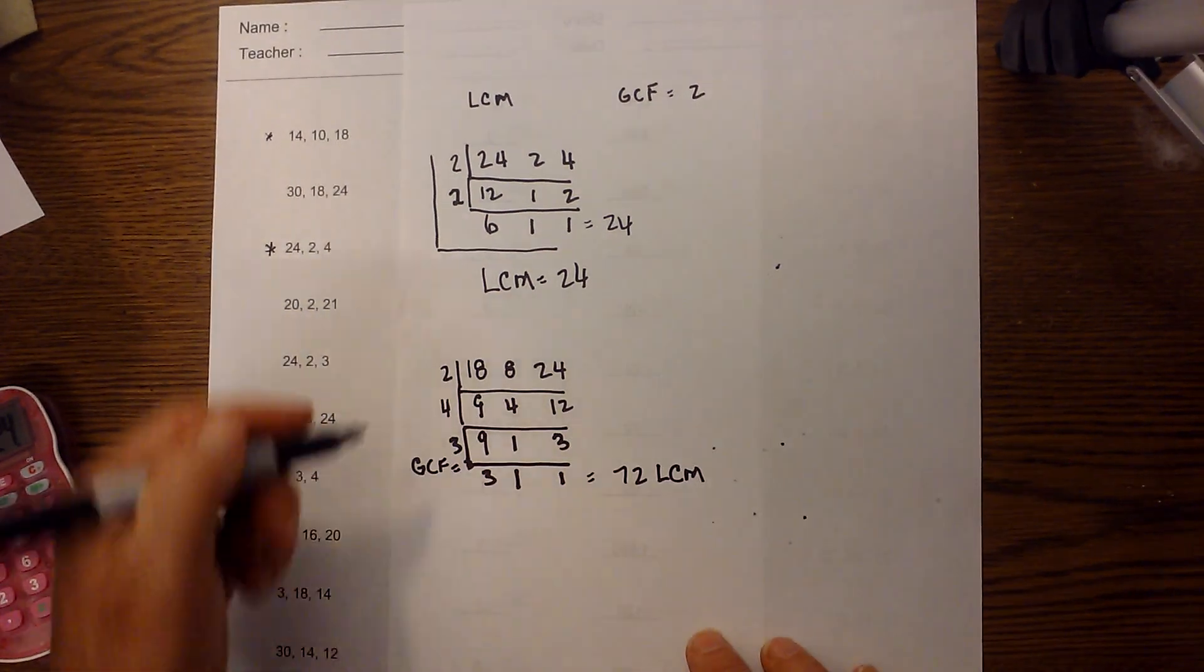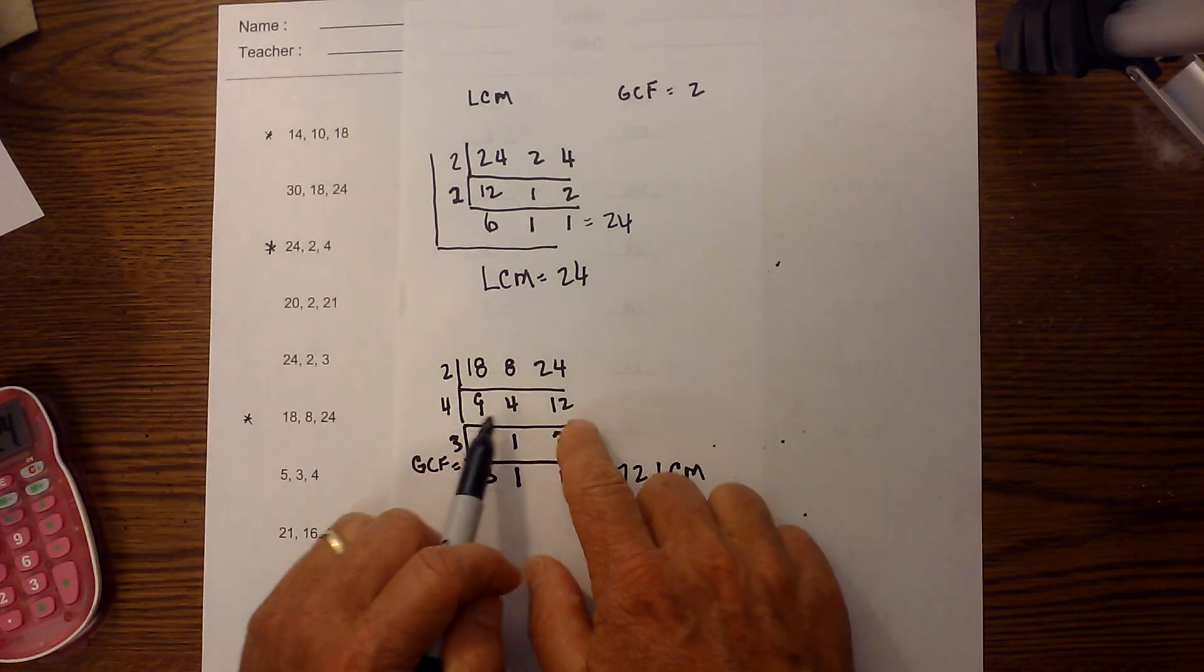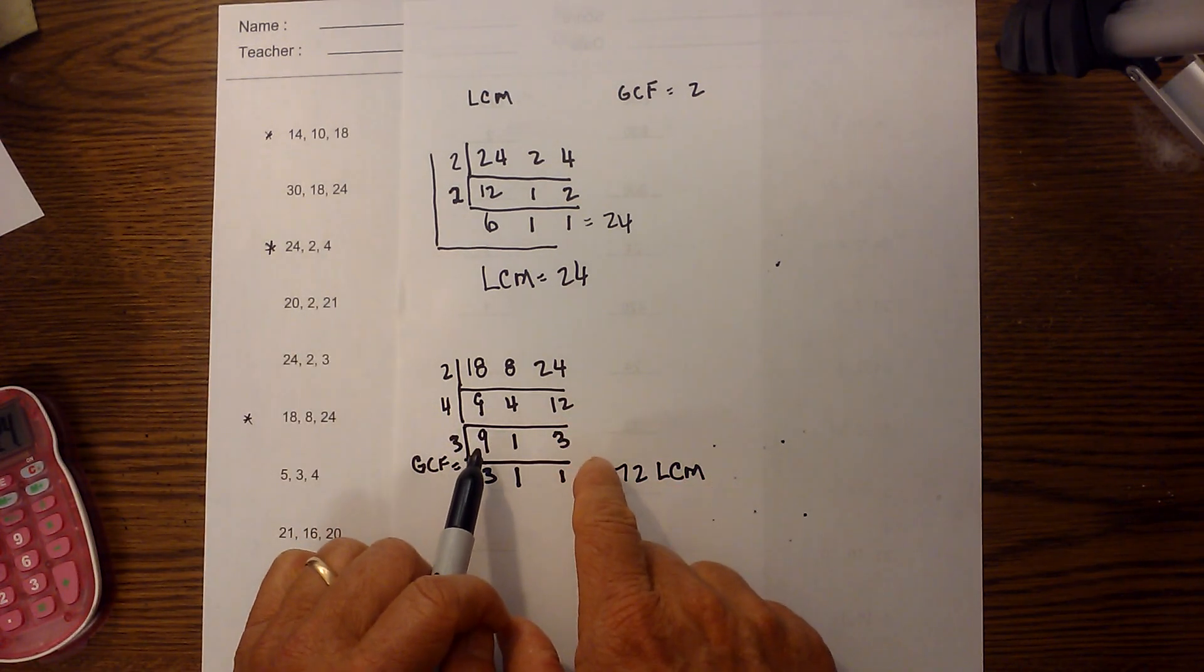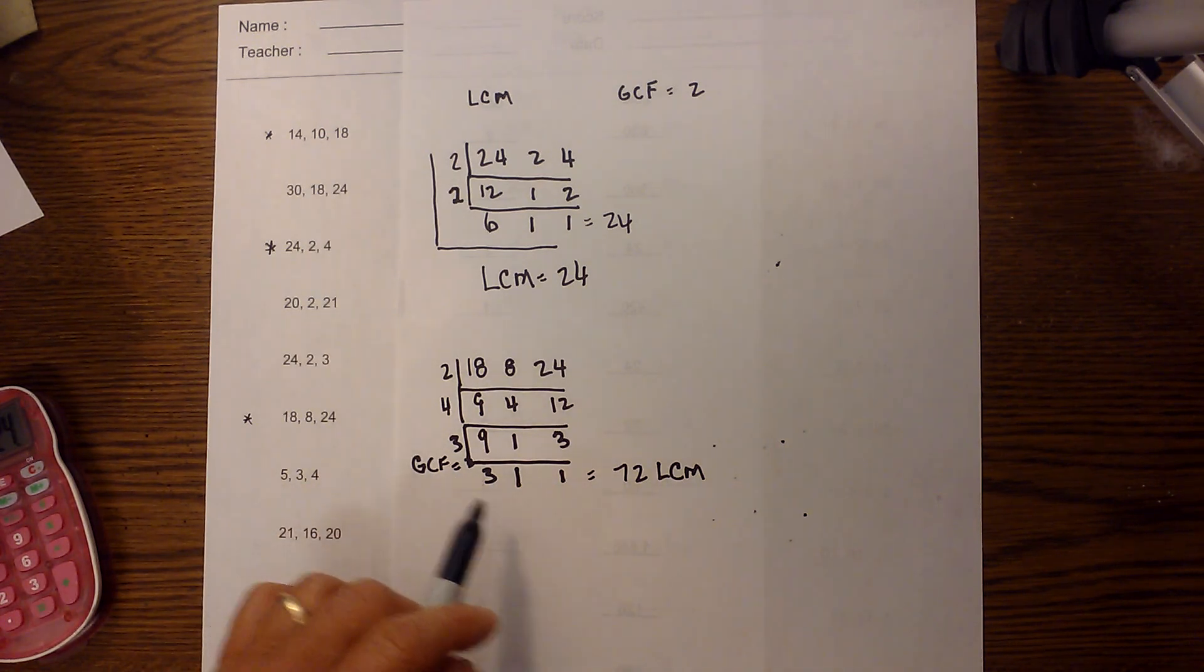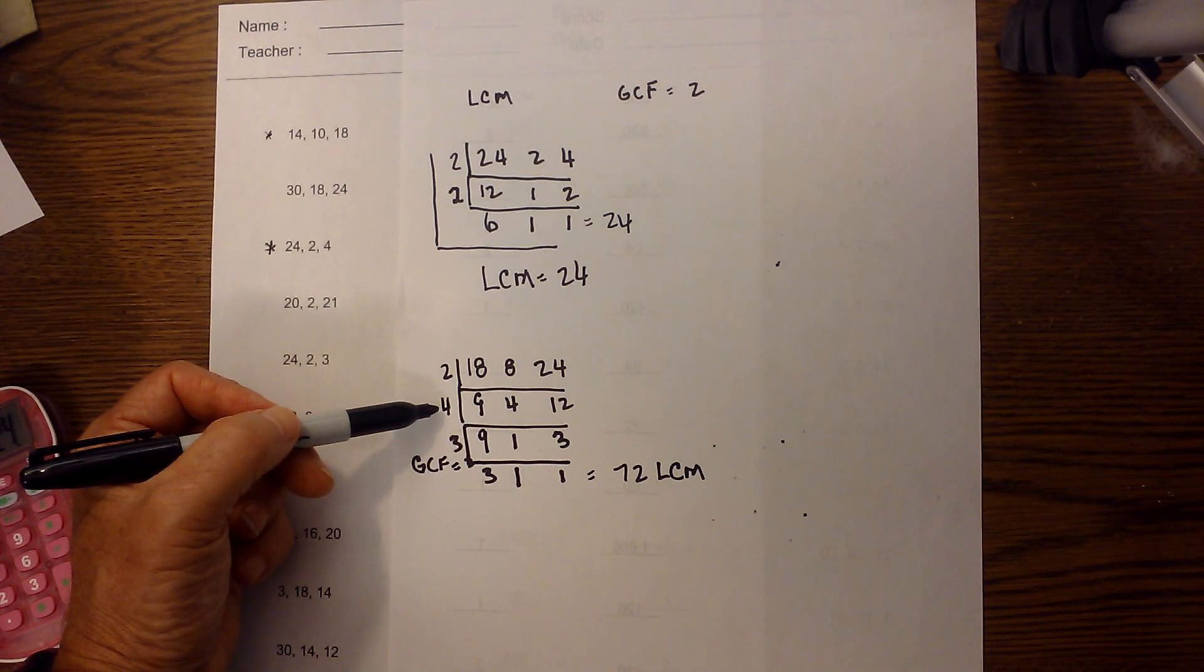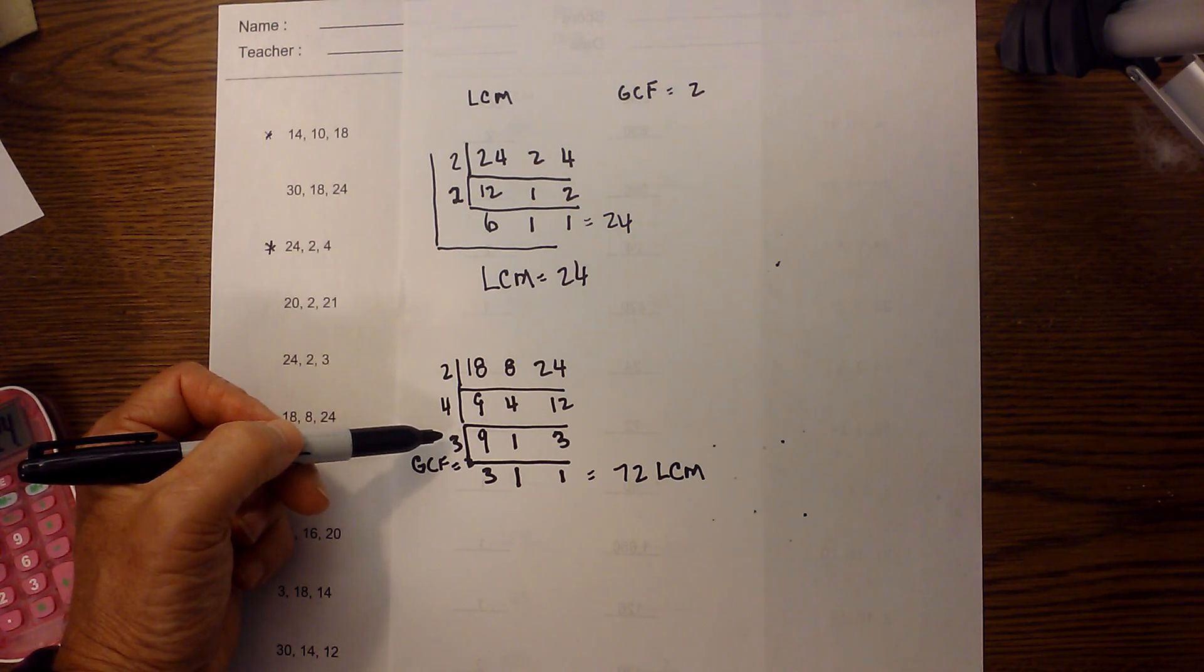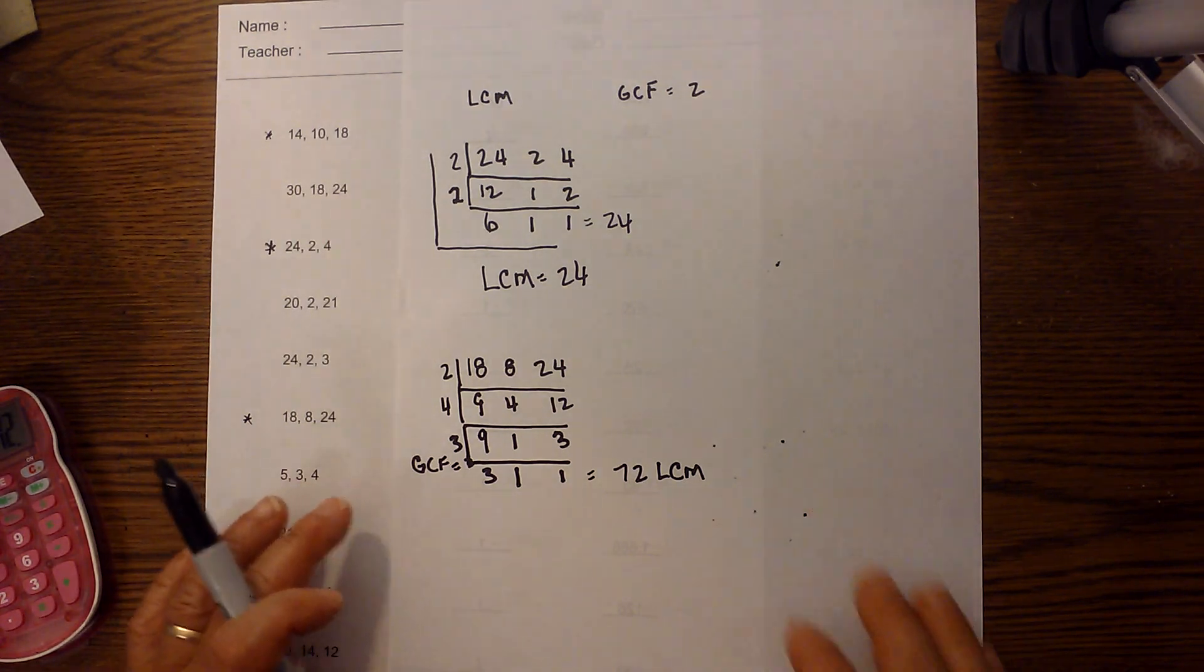Again, I did the L. I looked for pairs and I divided until there were no longer pairs that could divide into each other other than 1. Then 2 times 4 is 8, 8 times 3 is 24, and 24 times 3 is 72.